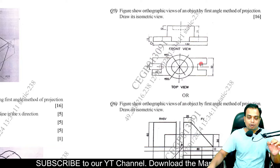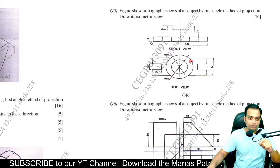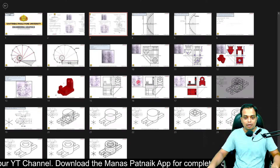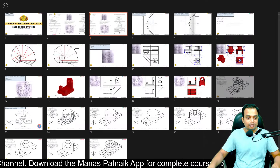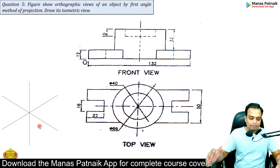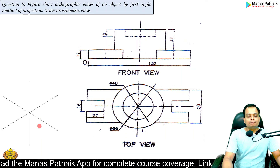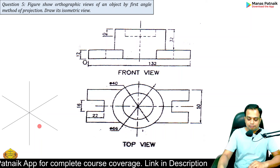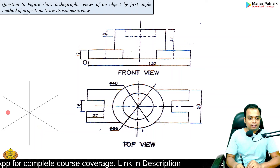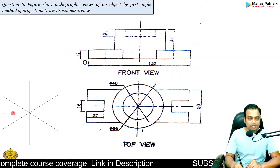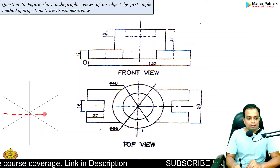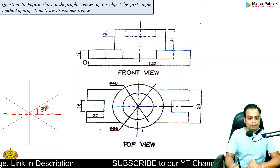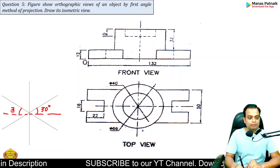You have been given the front and top views of an object, and what you need to create is its isometric view. Whenever you start making any isometric drawing, remember to first draw the isometric axes — a vertical and a horizontal — and two lines at 30-degree angles.